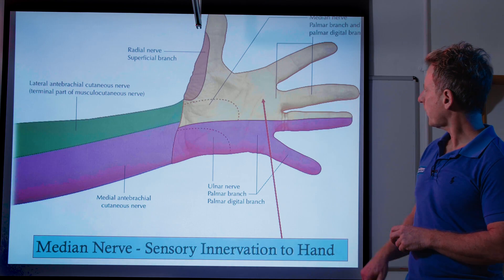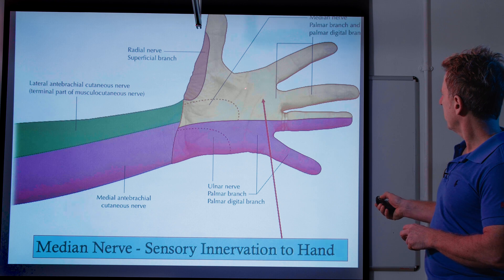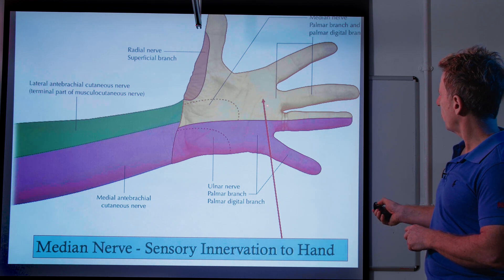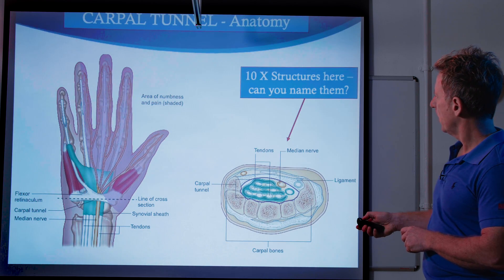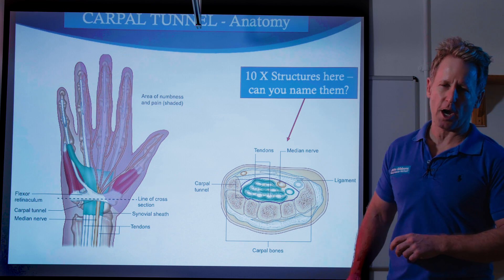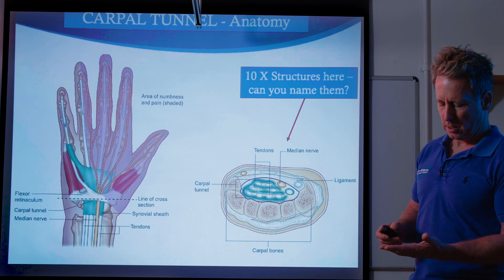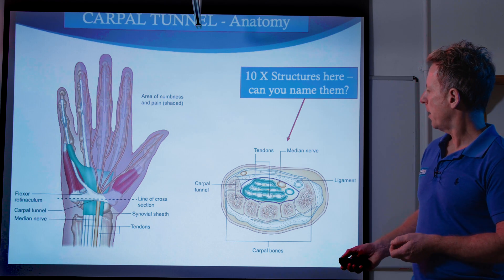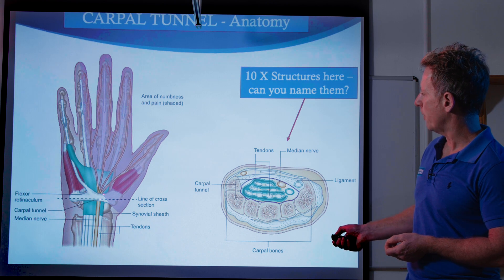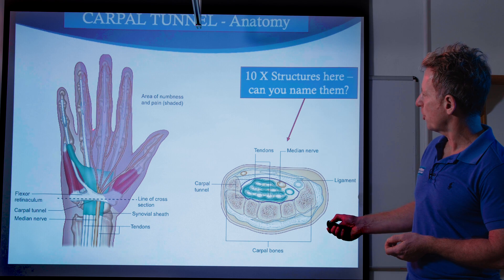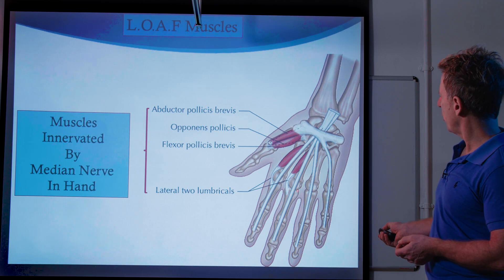The sensory innervation to the hand covers mainly the two-thirds of the hand supplied by the median nerve. The carpal tunnel has 10 structures passing through it: the eight tendons of flexor digitorum superficialis and profundus, the flexor pollicis longus, and the median nerve itself. If you've got any compression within the carpal tunnel, you're going to get altered sensation along that area.